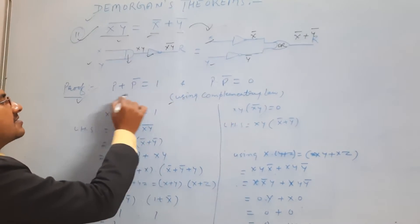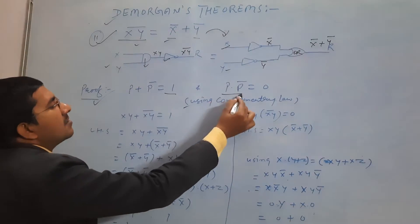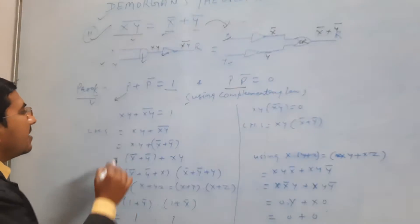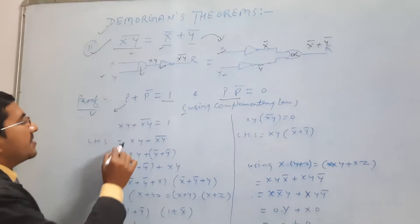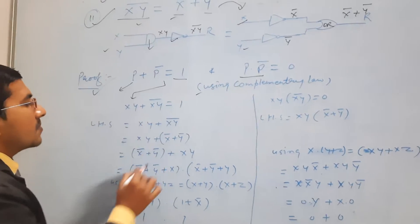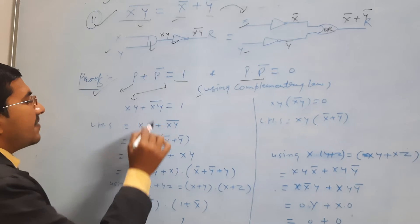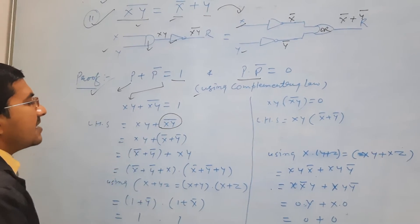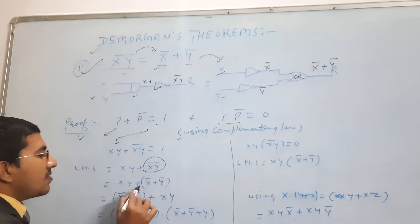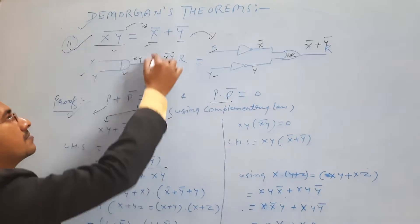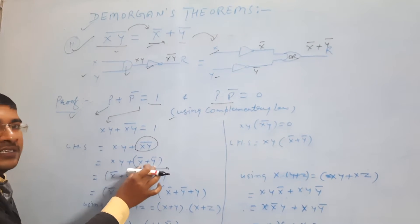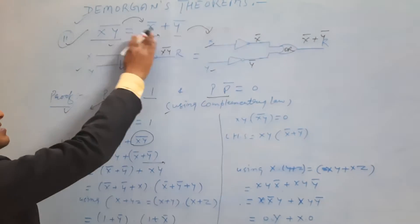Now using the complementary law we can say that p + p' = 1 and p · p' = 0. Here the value of p is xy. We have assumed p = x · y. Now after substituting the value of p: xy + (xy)' = 1. We have replaced this value in the statement to get xy + (x' + y') on the left-hand side. If we can prove this statement is equal to 1, then the statement is true.